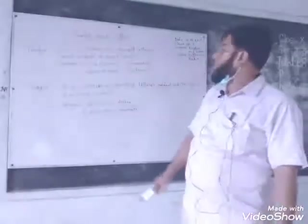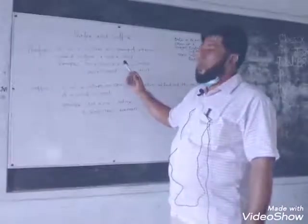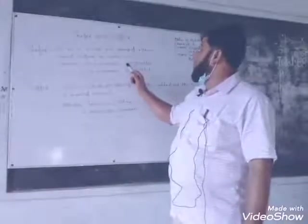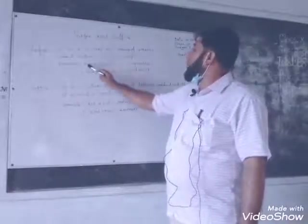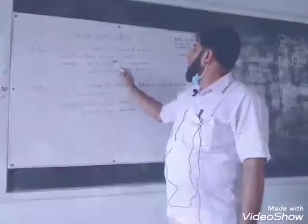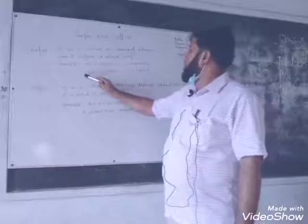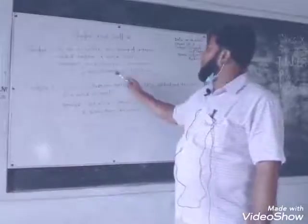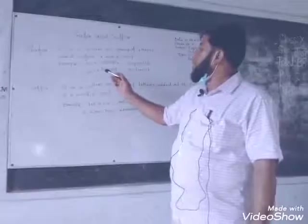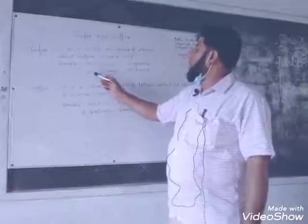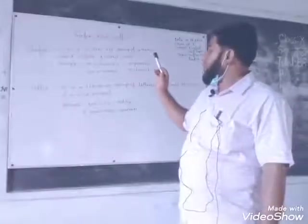Now we see an example: 'impossible.' Here, the root word is 'possible,' and 'im' is the prefix letter added before 'possible' to make 'impossible.' Second example: 'dishonest.' Here, 'honest' is the root word, and 'dis' is the prefix letters added with 'honest' to make 'dishonest.'